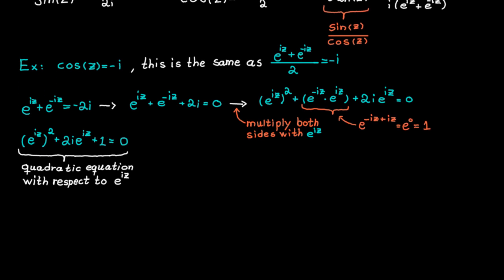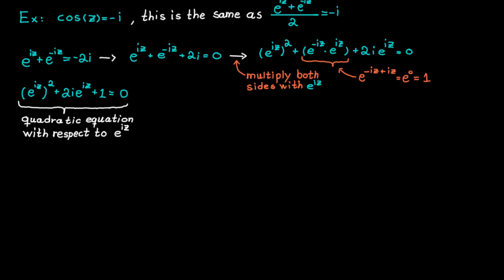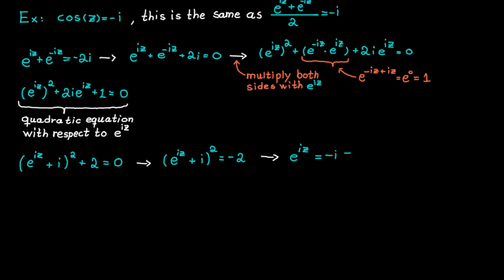The next step is to solve it using whatever method you like. Using the completing the square method, we get that e to the ic plus i, all raised to the power 2, is equal to minus 2. Taking the square root of both sides, e to the ic equals minus i plus or minus the square root of 2i.